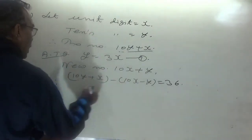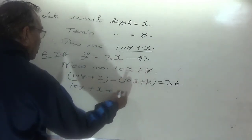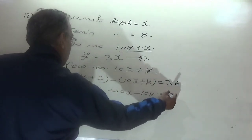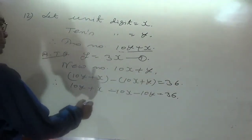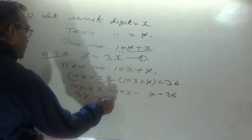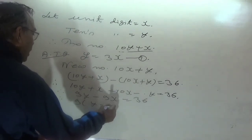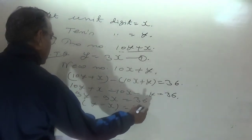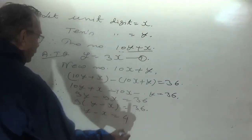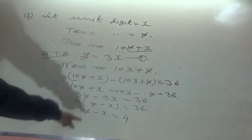Simplifying: 10y + x − 10x − y = 36, giving 9y − 9x = 36. Taking 9 common: y − x = 4.